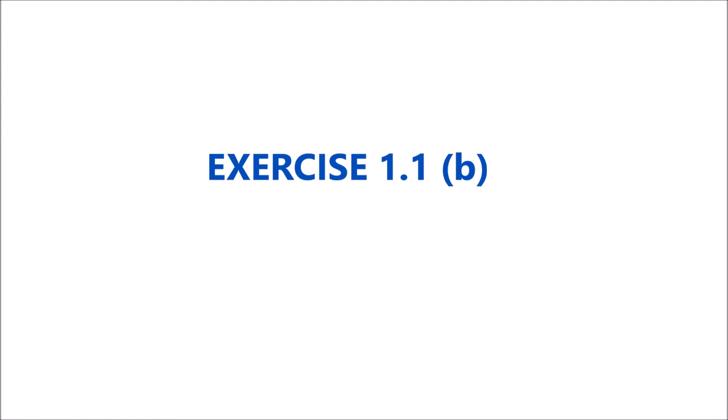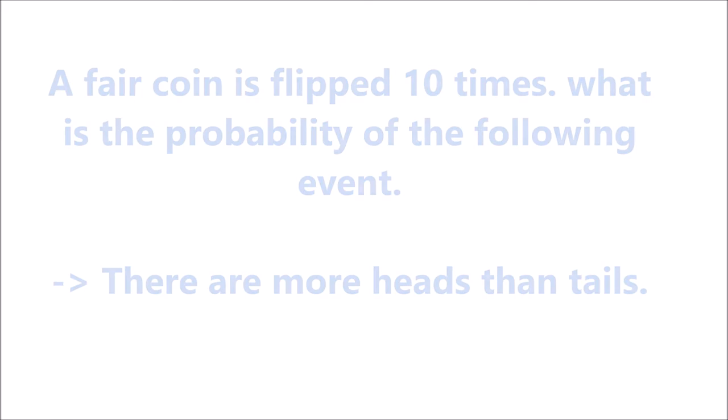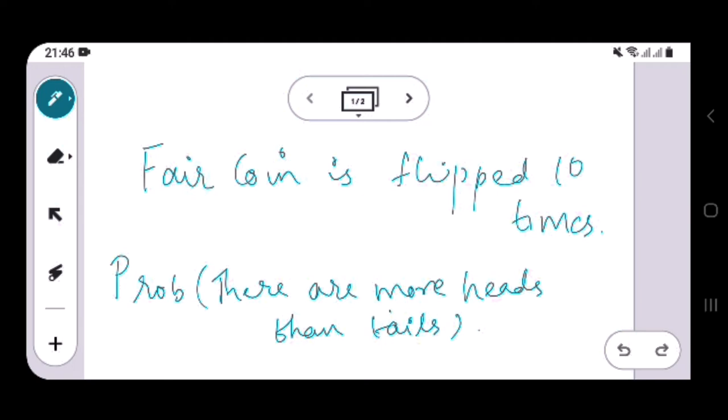Hello and welcome to the Probability and Computing problem-solving series. Today we will be solving a problem where a fair coin is flipped 10 times and we need to find the probability of getting more heads than tails.